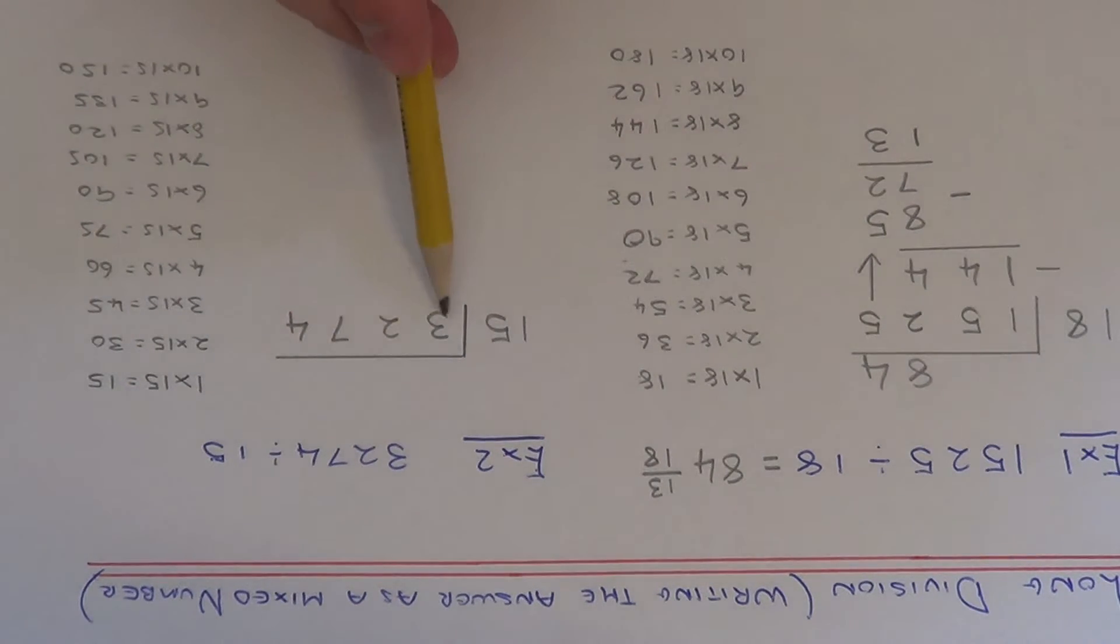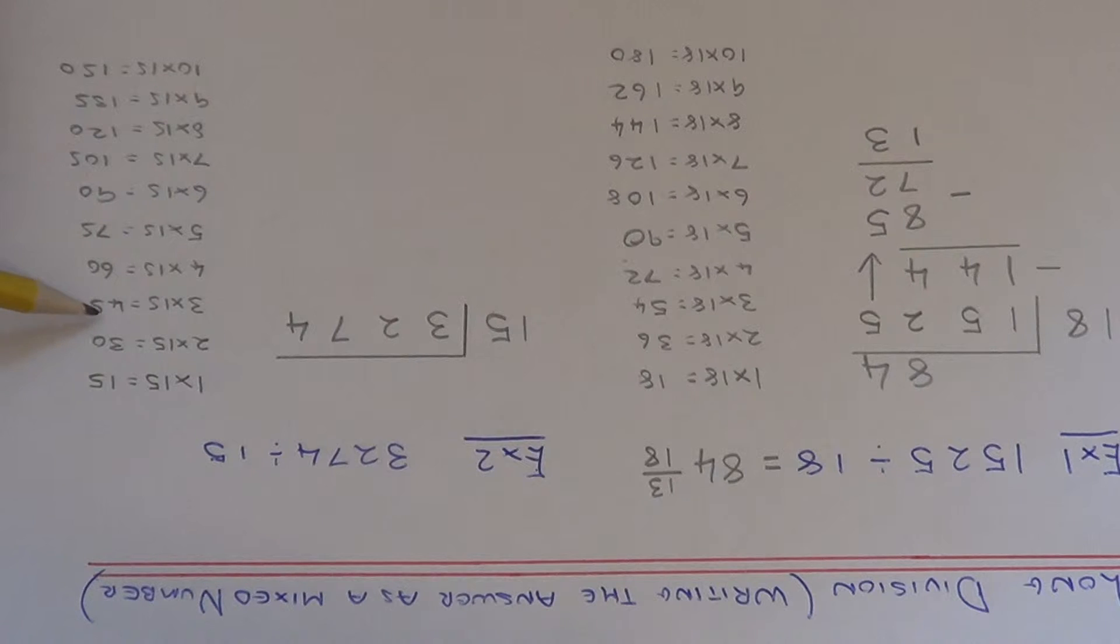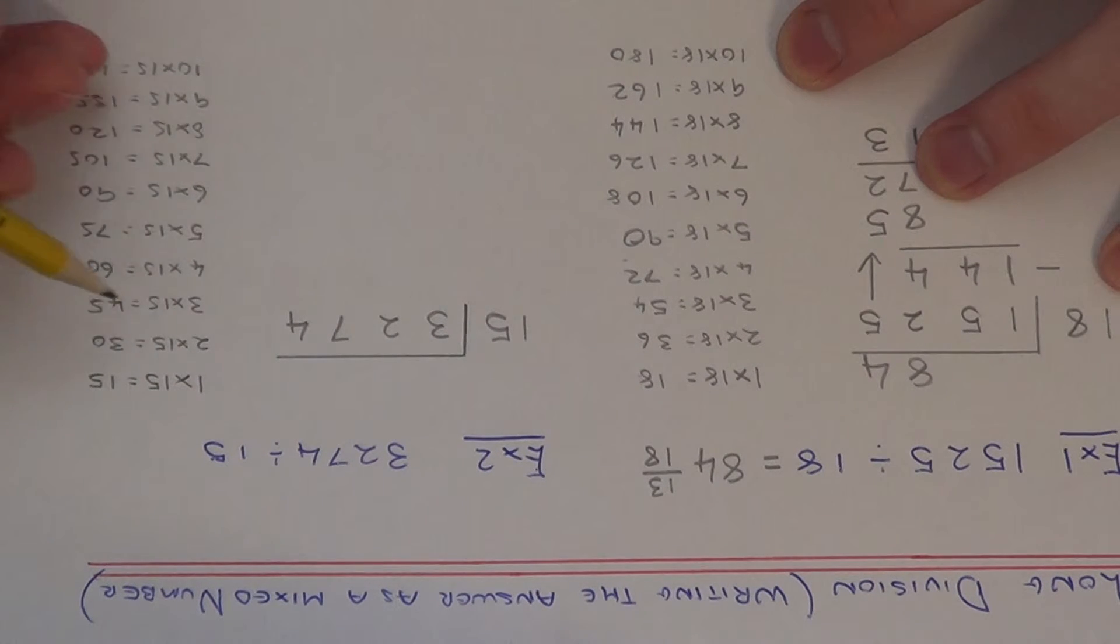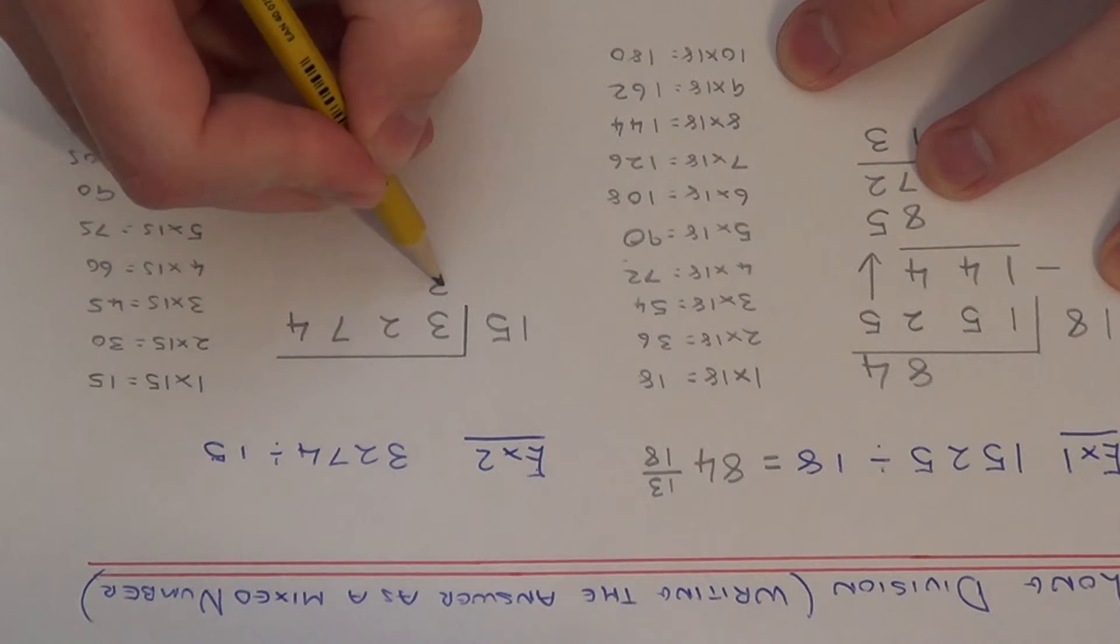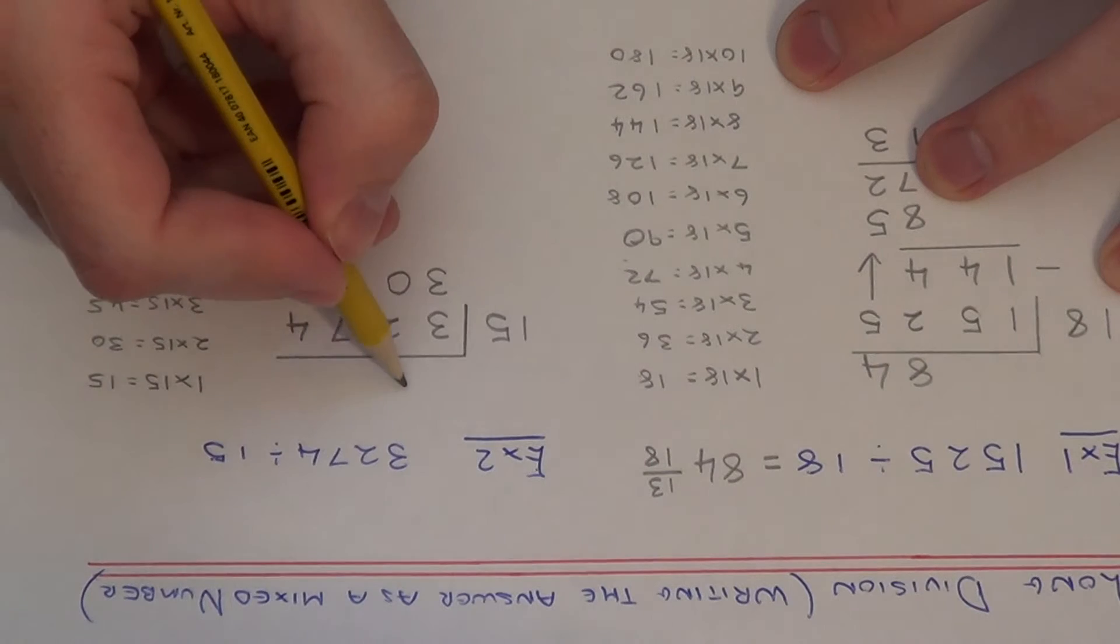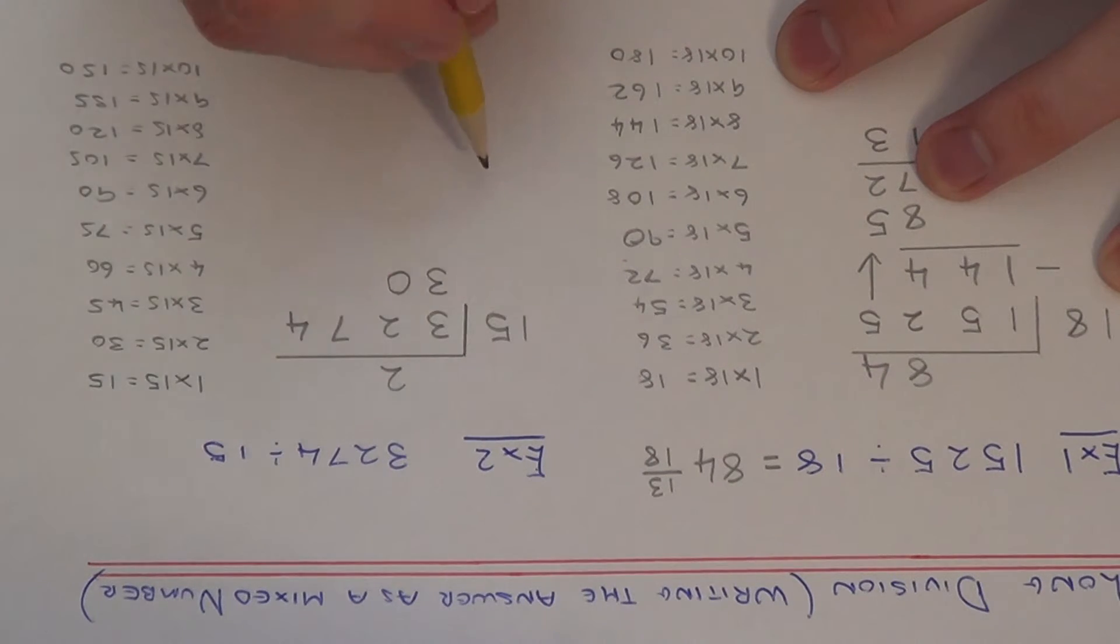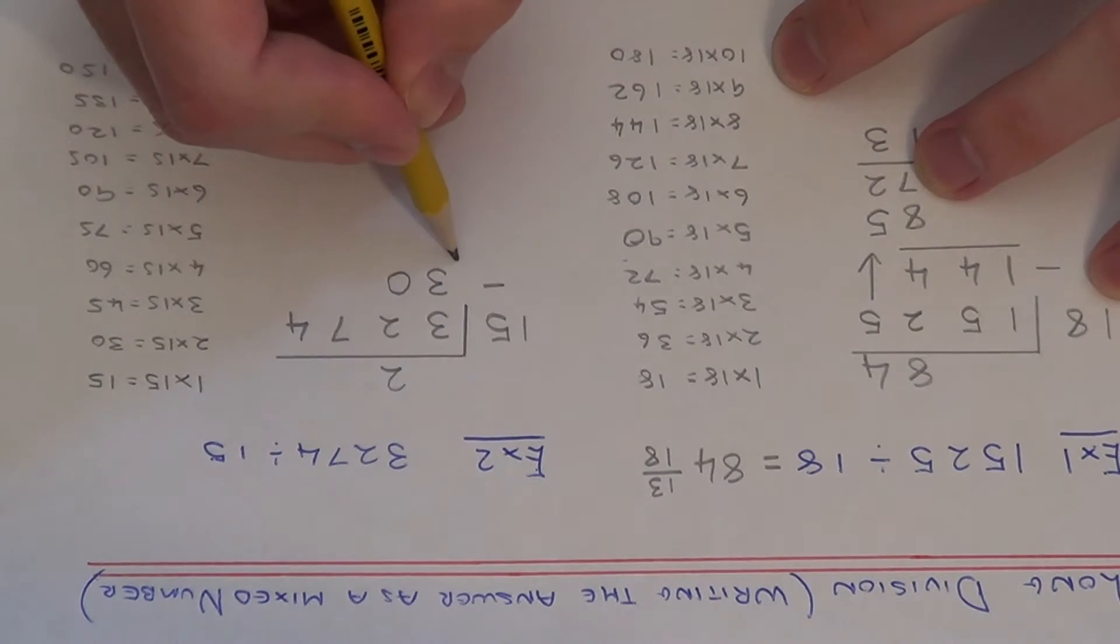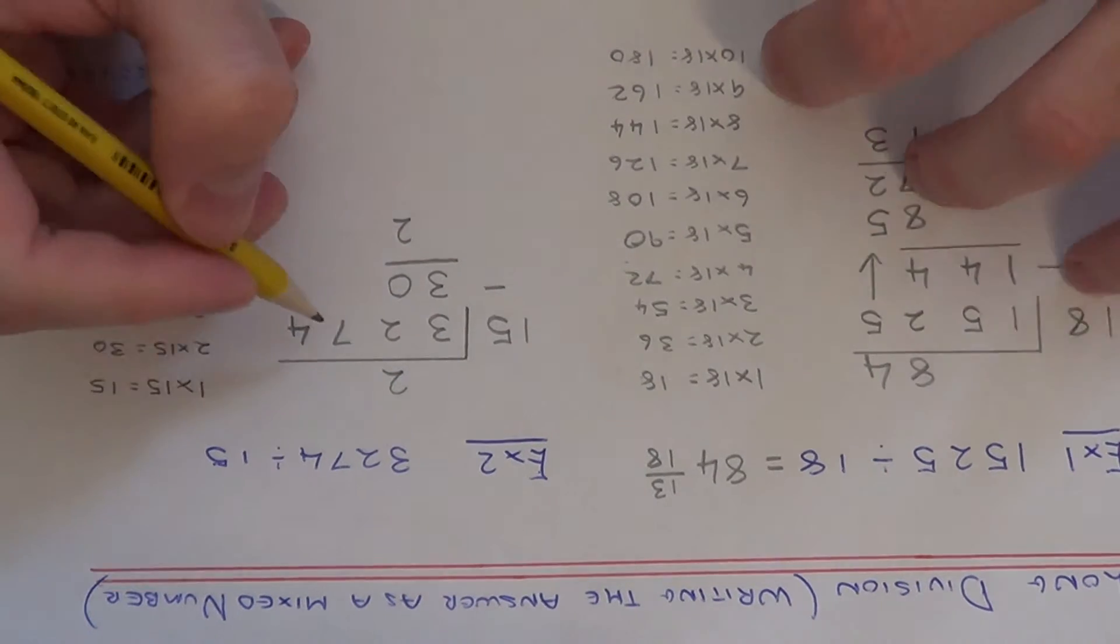3 divided by 15 we can't do, so we need to look at 32 divided by 15. Let's have a look for our best multiple. 15, 30, 45. 45 is too big, so stop on the 30. That's 2 times 15. If we write that underneath the 32 and put the 2 at the top because it was 2 times 15. If we take these two numbers away, 32 take away 30 gives 2.